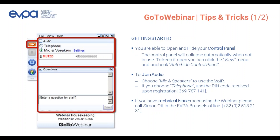In the join audio section of the control panel, you should tick the option microphone and speakers if you are joining the webinar through the internet. If you are using the telephone rather than VOIP, you must choose telephone and use the PIN code provided in the confirmation you received when you registered for this webinar. You can also see the PIN on this slide. If you encounter any technical issues, please don't hesitate to call EVPA and get in touch with our colleague Simon.